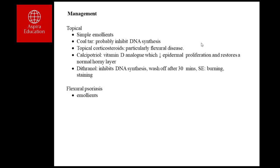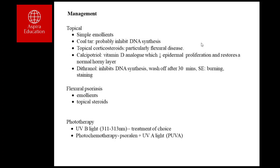For flexural psoriasis, management includes emollients, topical steroids, and phototherapy. Phototherapy uses narrowband UVB light at a bandwidth of 311–313 nanometers, which is the optimal therapeutic range. Photo-chemotherapy — PUVA — combines psoralen, which increases photosensitivity, with UVA exposure. A problem with phototherapy is an increased risk of skin cancer, especially squamous cell carcinoma, and accelerated skin aging.